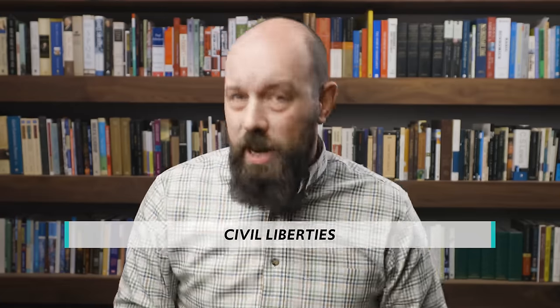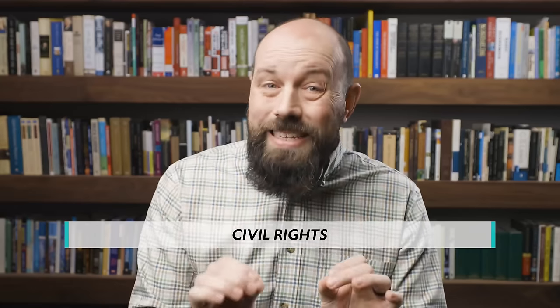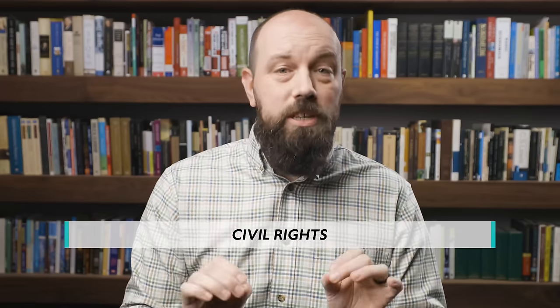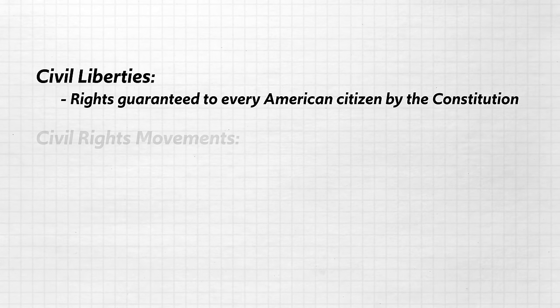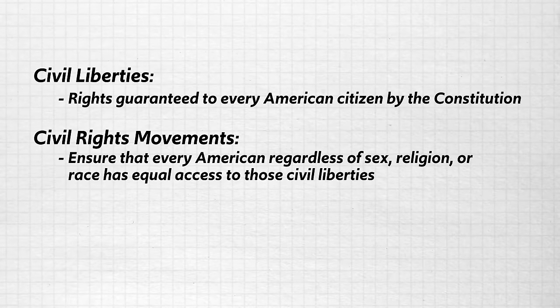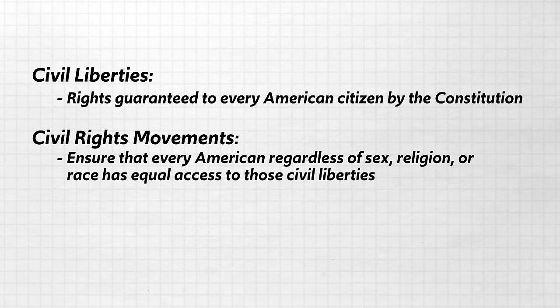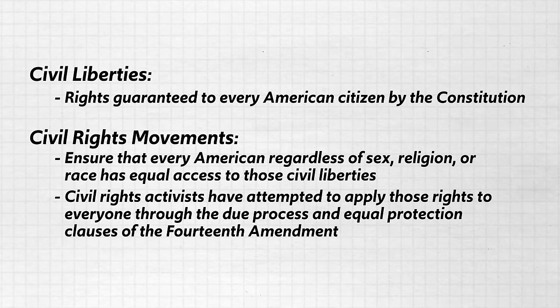Before we get into that, let me make a distinction that might help clear up some confusion. Over the course of Unit 3 we've been talking about civil liberties guaranteed to Americans via the Bill of Rights — things like free speech, free exercise of religion, and the right to a lawyer in court. Civil liberties are rights guaranteed to every American citizen by the Constitution. Civil rights movements, by contrast, make sure that every American regardless of sex, religion, or race has equal access to those liberties. The main way civil rights activists have attempted to apply those rights to everyone is through the due process and equal protection clauses of the 14th Amendment.